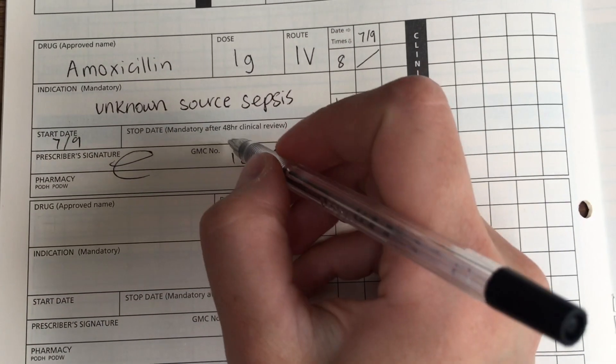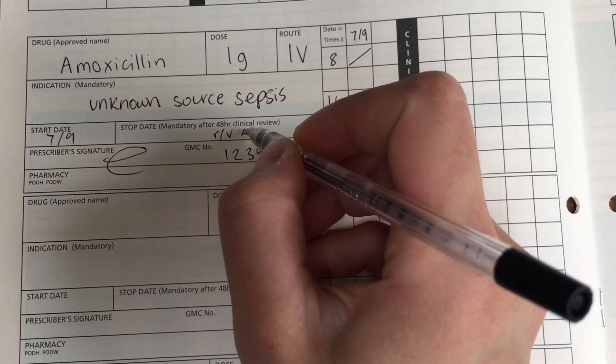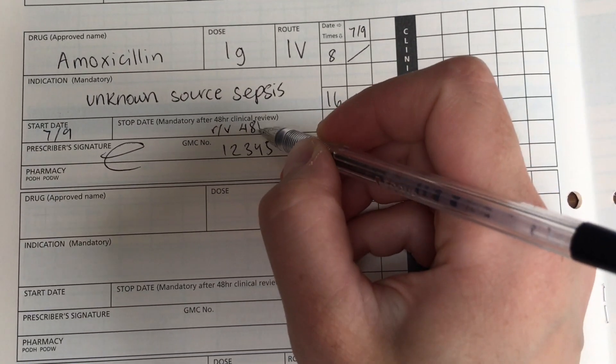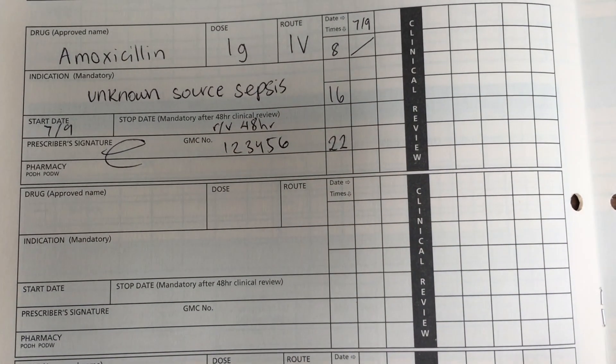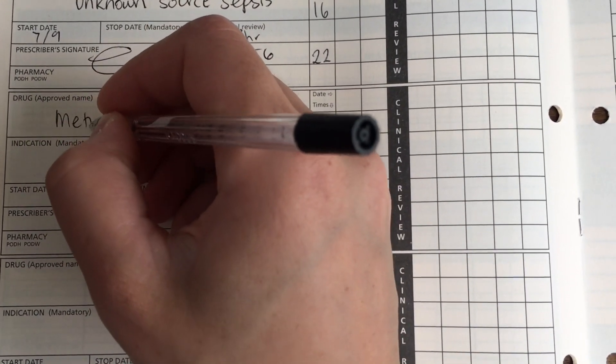So, here I'm putting 8-16-22 as the three times a day. I've crossed off the first one, because I'm imagining that the patient has come in later in the day, and I'm putting the indication, which is unknown source sepsis. If it's unknown when the antibiotic will be stopped, just put review in 48 hours, so that at least it is reviewed and reassessed.